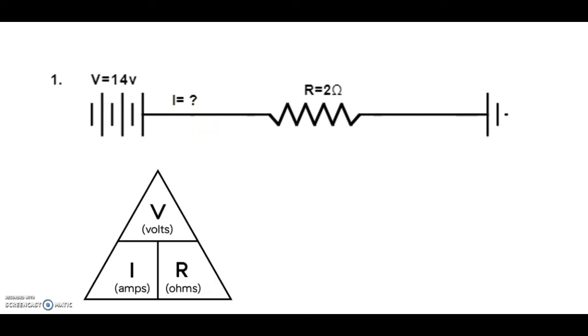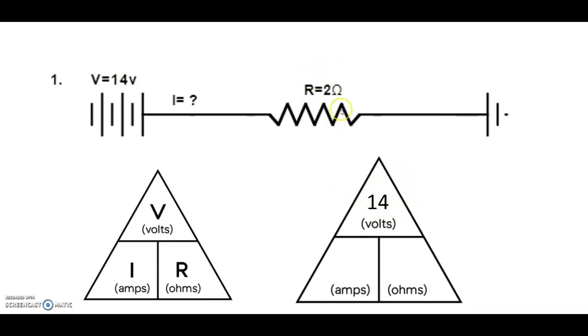Okay, so we've now got our triangle, VIR, or volts, amps, resistance. So let's bring down another triangle, and what we're going to do is slot in the information that we have. Okay, so we know the voltage. Let's put the volts in over here. Okay, and we also know the resistance.